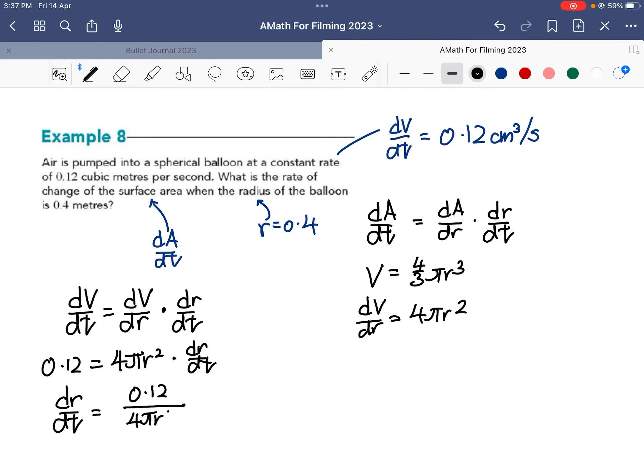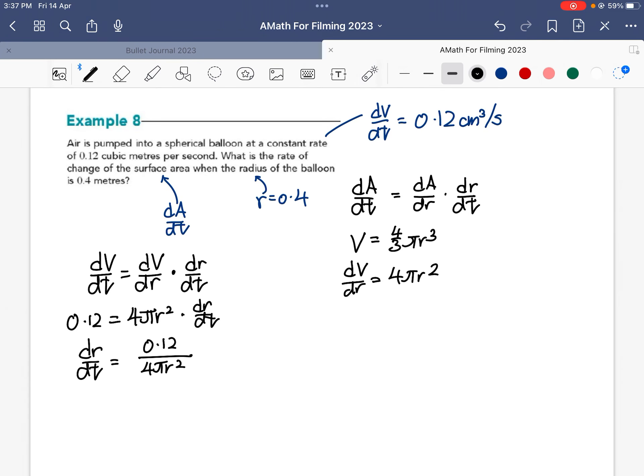Then if I just simplify this, I find that my rate of change of radius with respect to time is 0.12 over 4πr². If you want to simplify, actually let's just leave it—don't go and divide by 4, we'll just leave it alone.